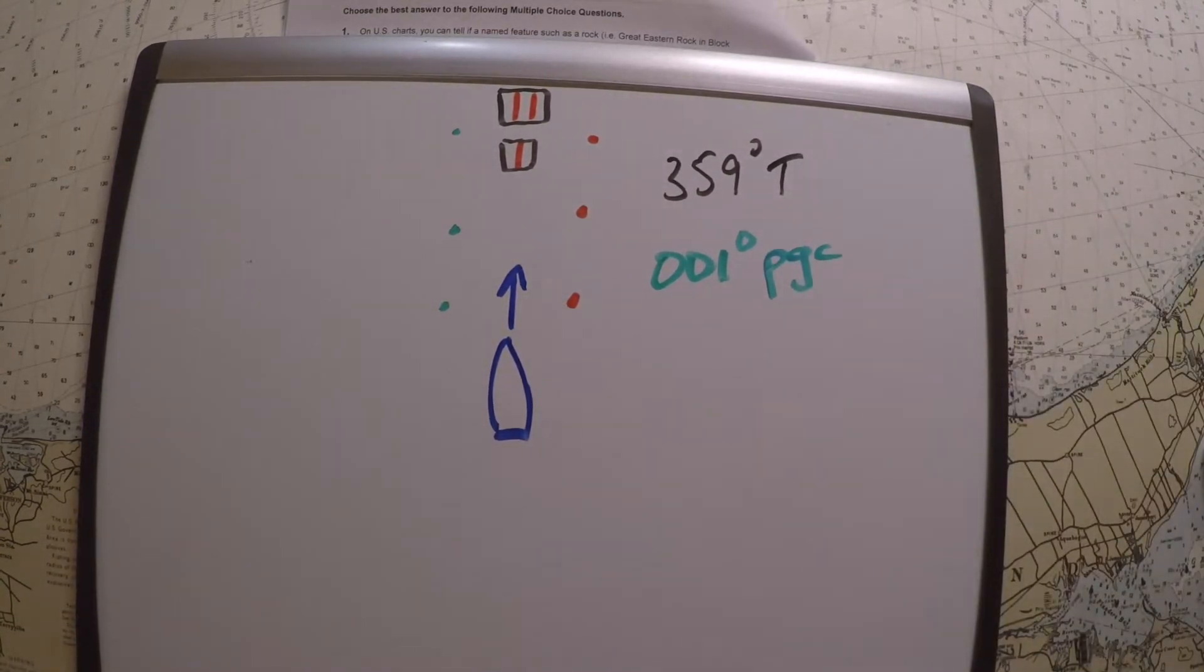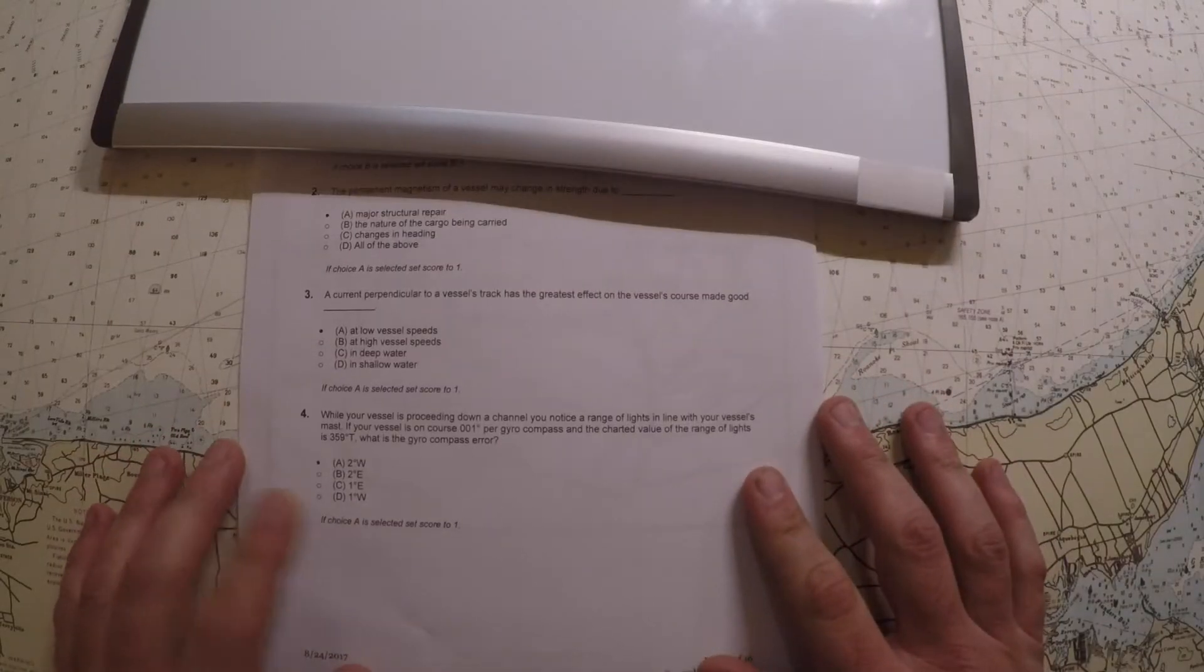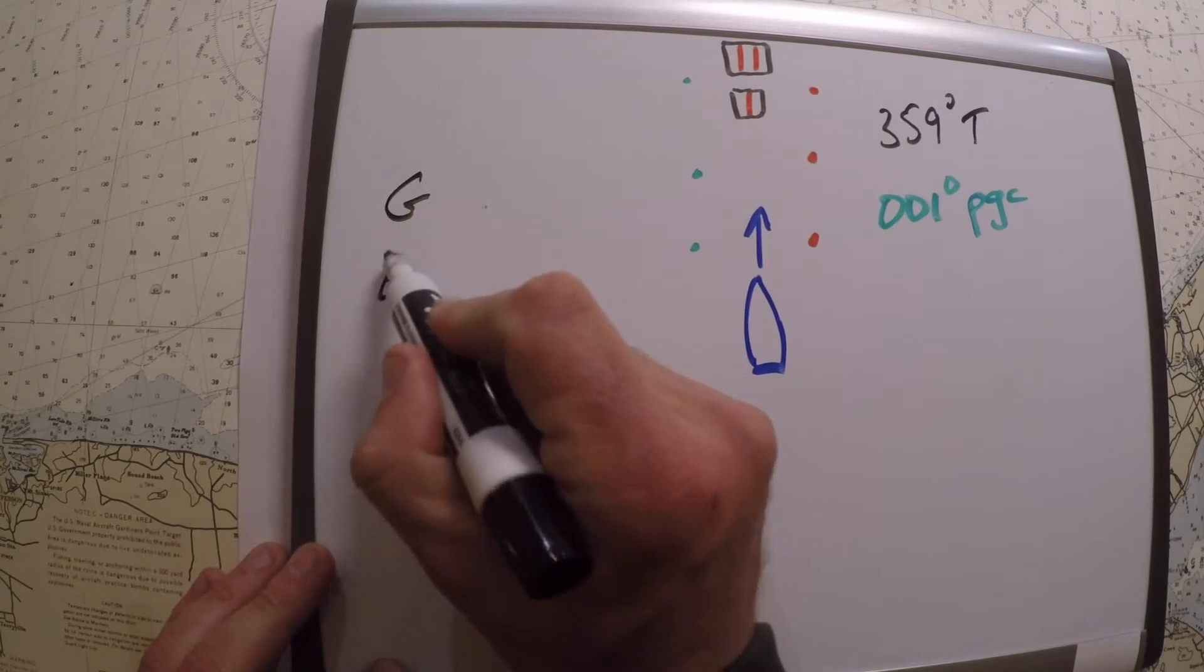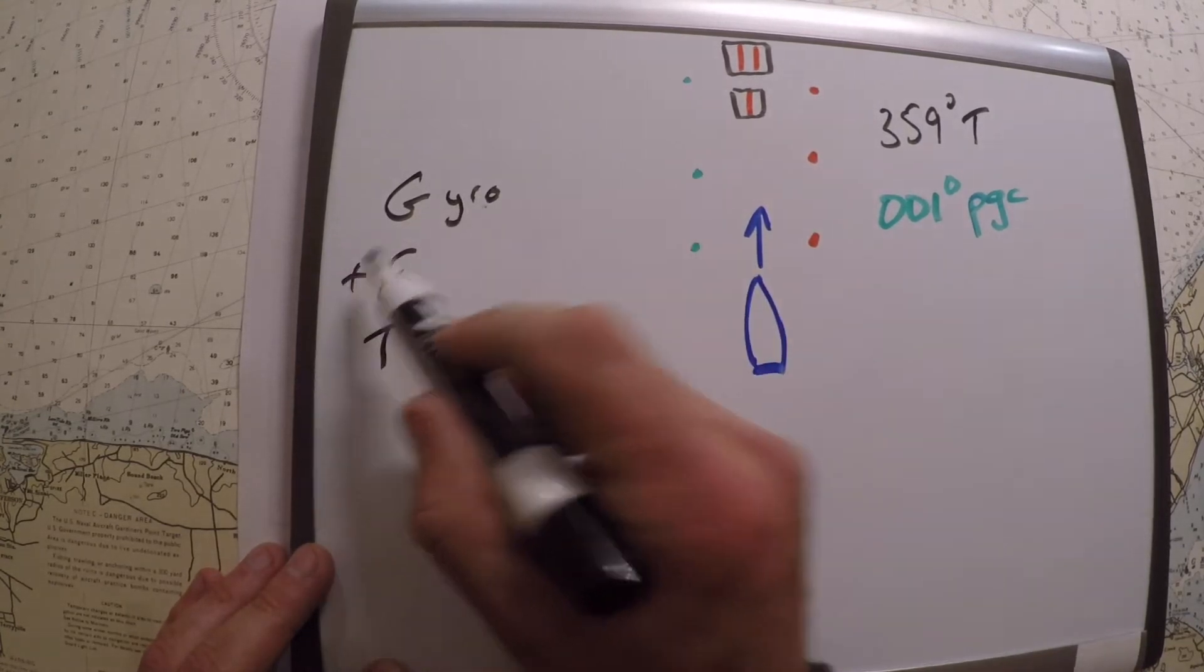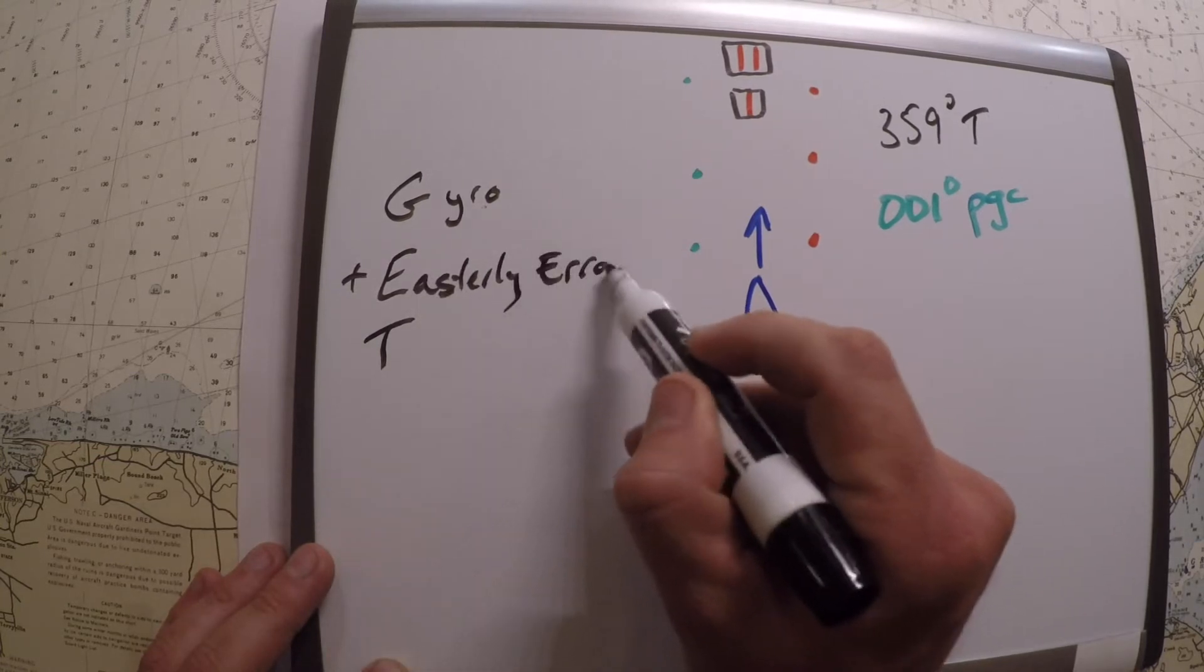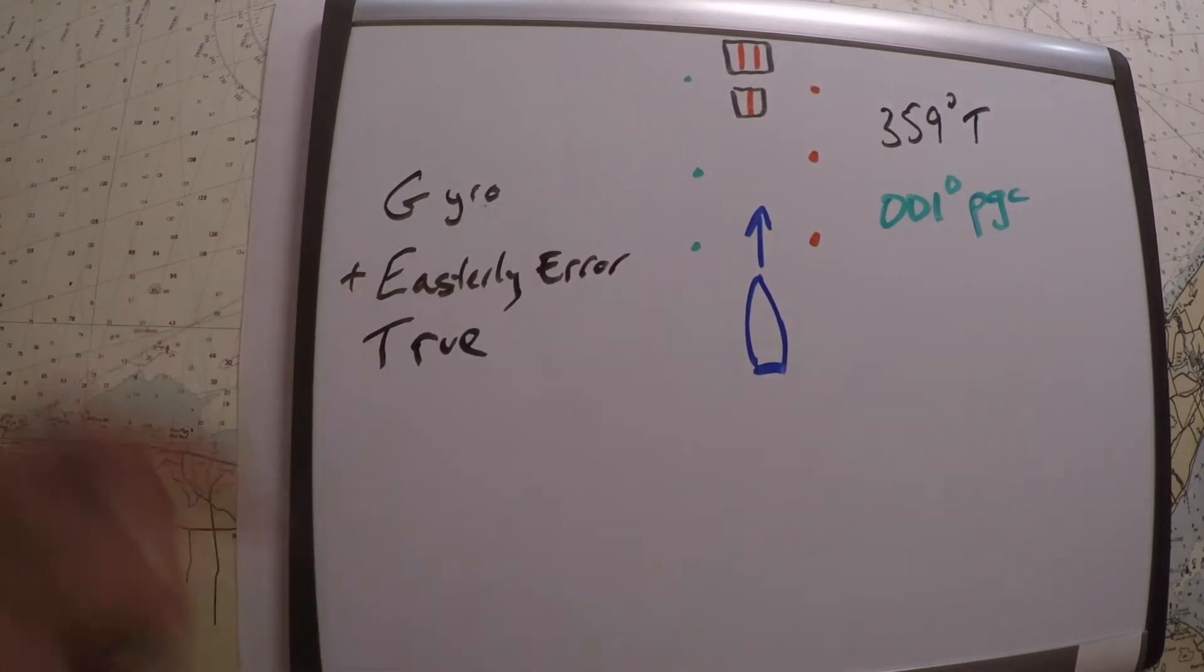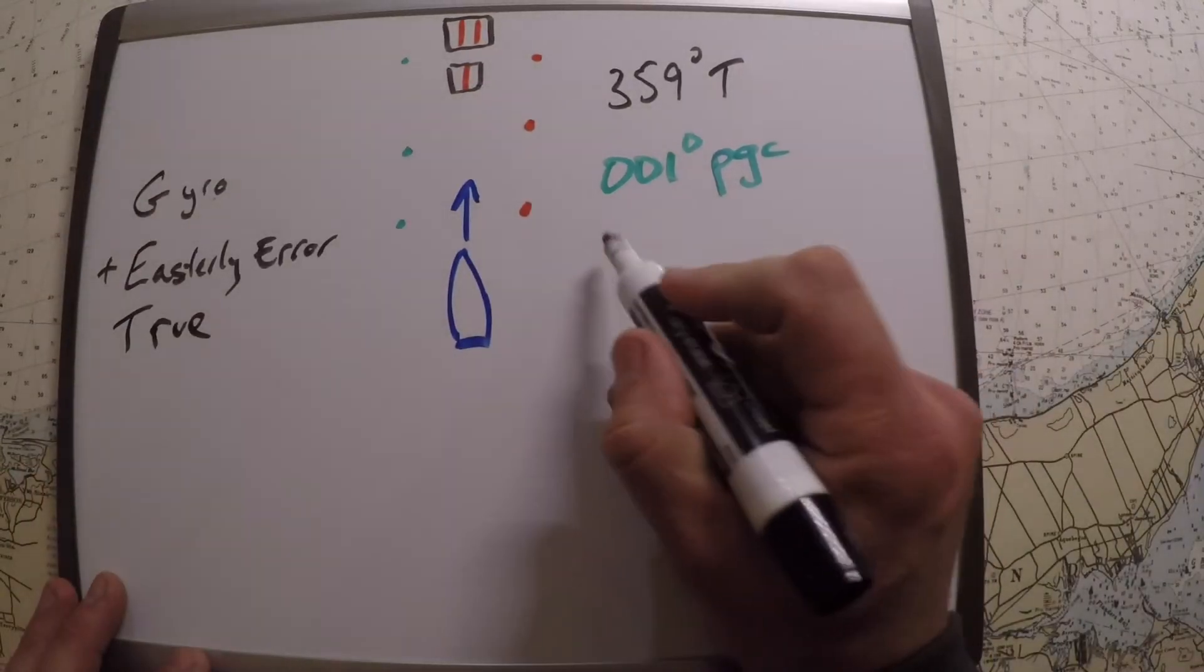It's asking you what is the gyro compass error in this case. Well, the thing you got to remember for gyro compass error problems is the memory aid GET. And what that means is: Gyro plus Easterly Error equals True. All right, so if you remember GET—Gyro plus Easterly Error equals True—you can then set up something like this.